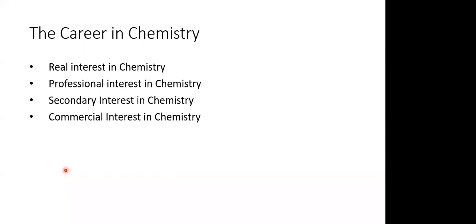I have career opportunities in chemistry divided into four types: one is a real interest in chemistry, then professional interest in chemistry, secondary interest in chemistry, and commercial interest in chemistry. Let us try to talk first about real interest in chemistry. That means you would like to work in the field of chemistry alone — you would like to do research, you would like to do teaching in chemistry. Professional interest in chemistry is where you would like to work in any industry as a chemist and develop yourself in that profession.